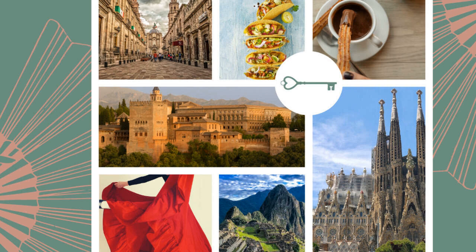For example: 'Nos conocimos en la escuela' — we met each other at school. 'Mi hermana y su amiga se conocen desde la guardería' — my sister and her friend have known each other since kindergarten. And if you use it as a reflexive verb, it means 'to know oneself.' For example: 'Ella dice que ya no se conoce a sí misma' — she claims she doesn't know herself anymore.